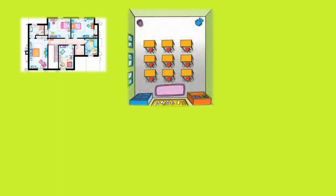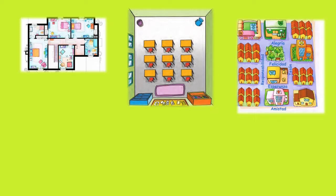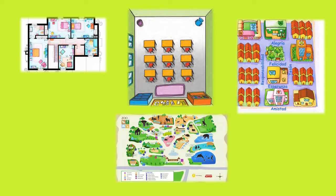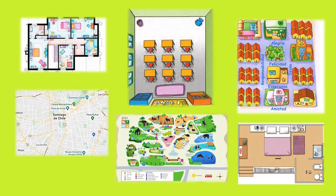Veamos algunos planos. Acá tenemos el plano de una casa, luego el plano de una sala de clases, el plano de un barrio, el plano de un zoológico, el plano de un dormitorio, el plano de Santiago de Chile. Existen muchos otros planos, de otros lugares, como por ejemplo de un metro o de un parque de diversiones.